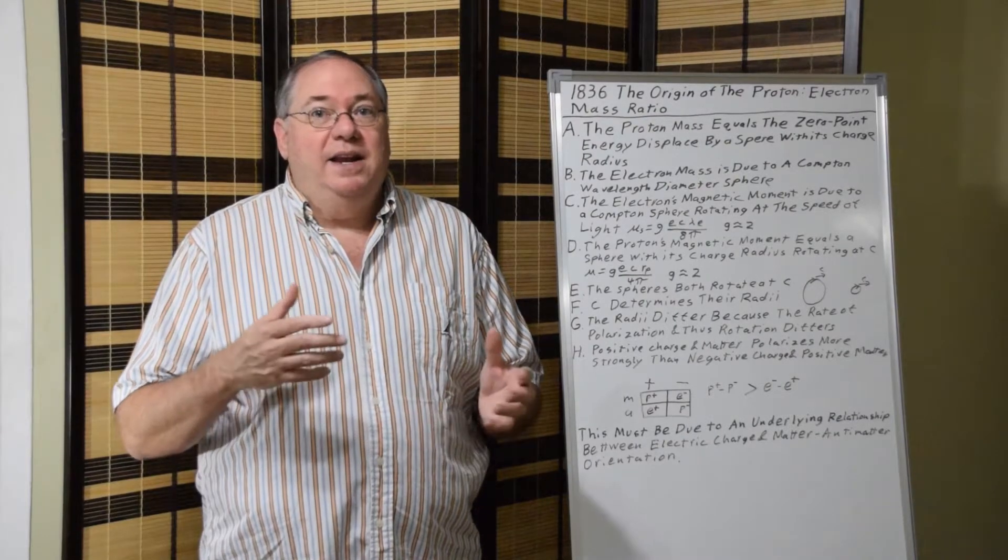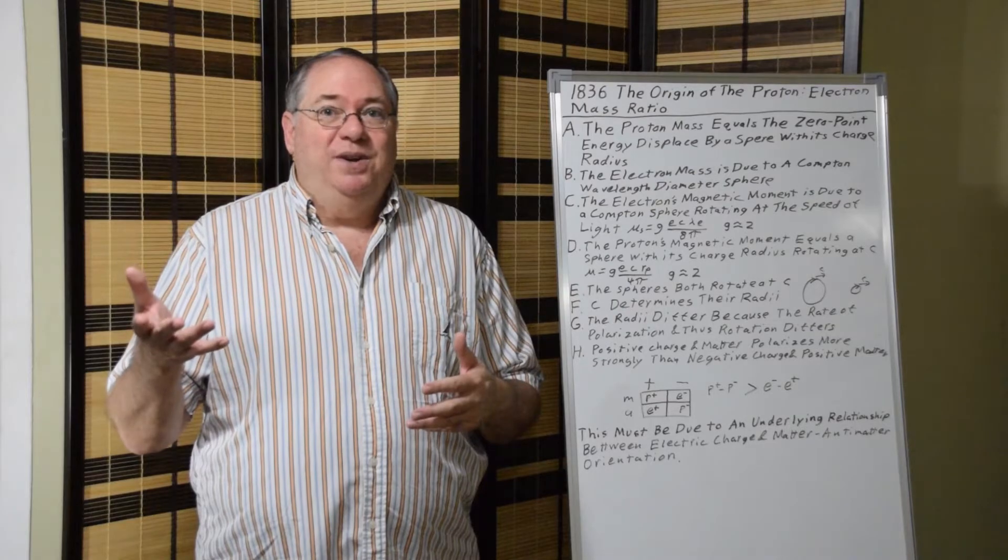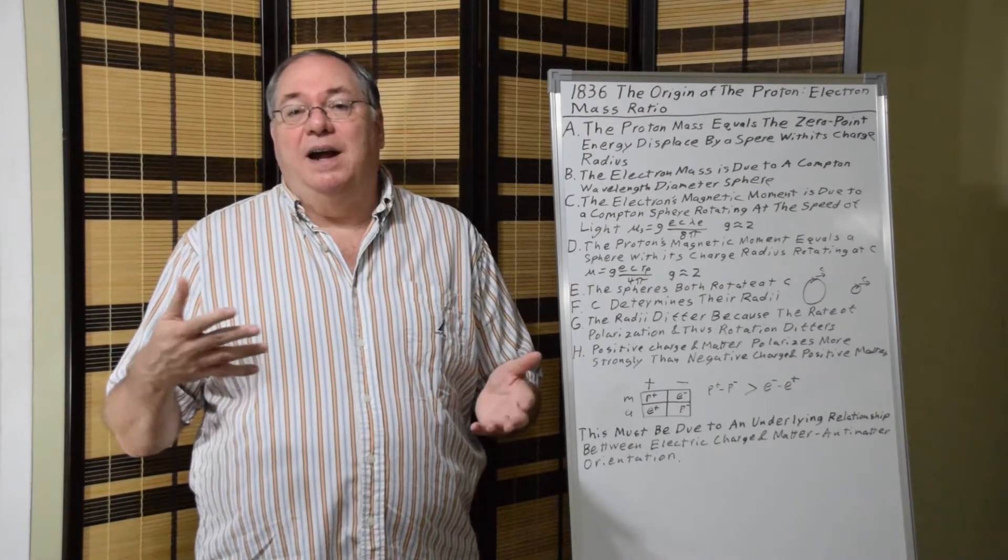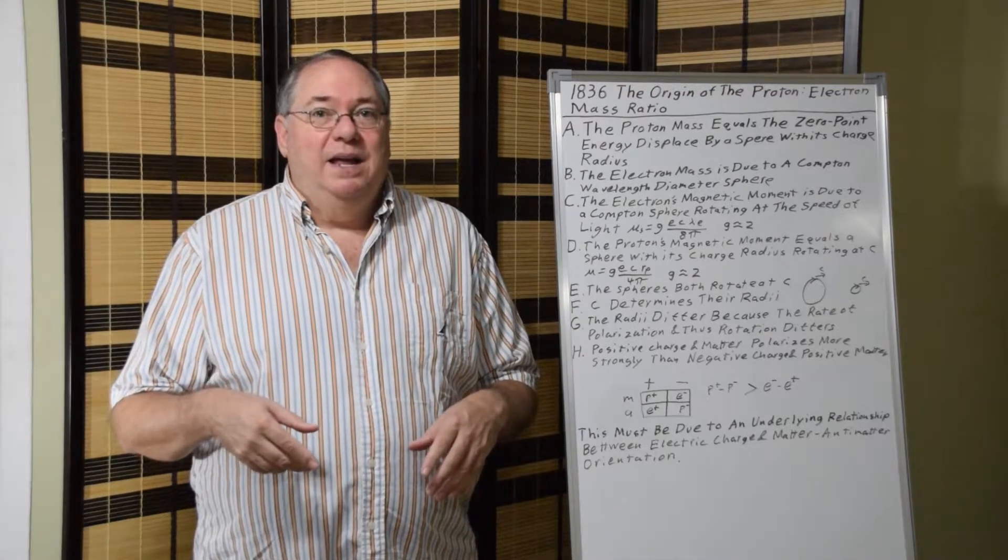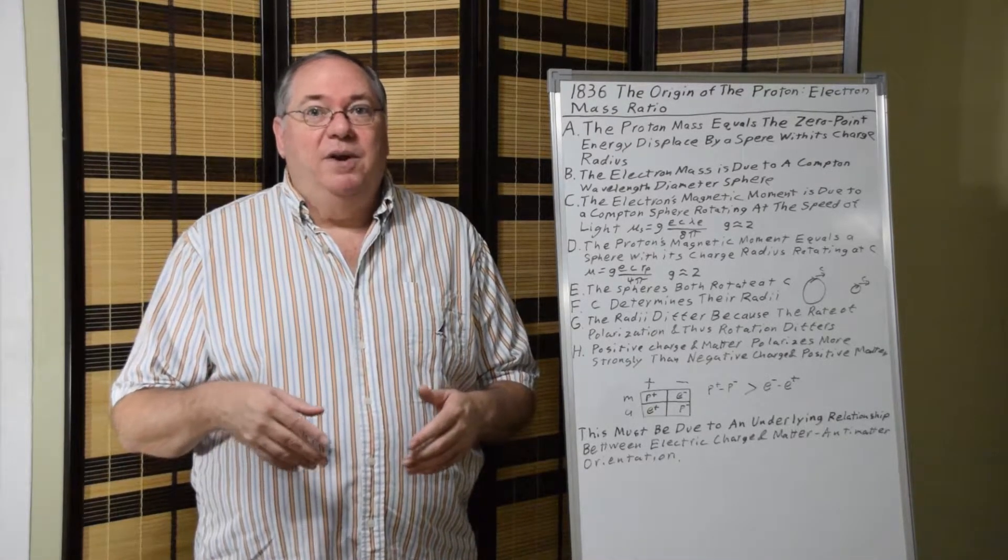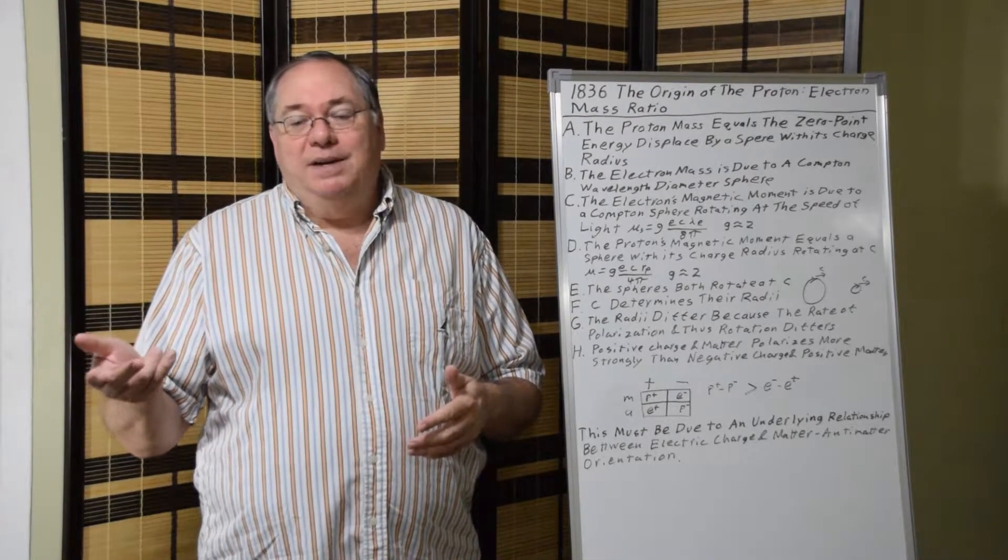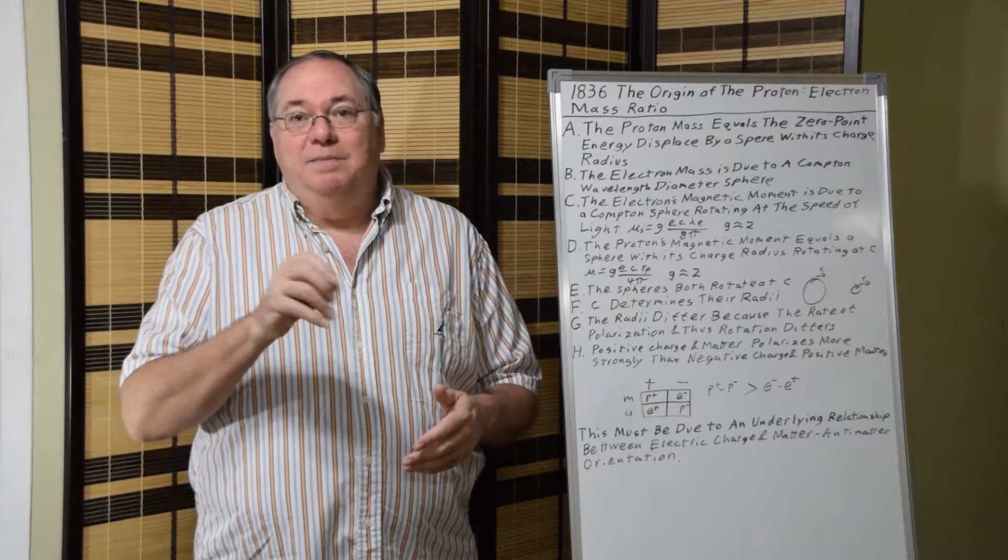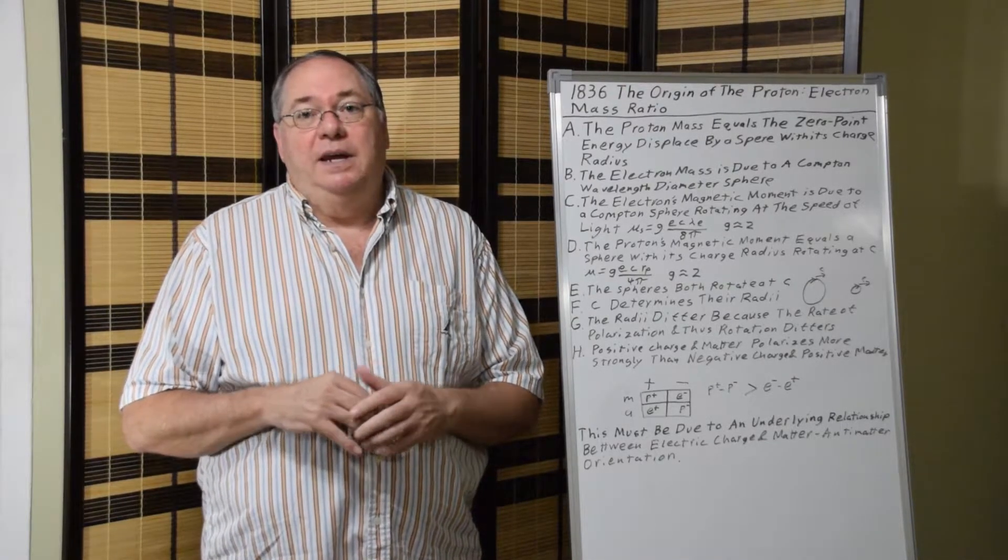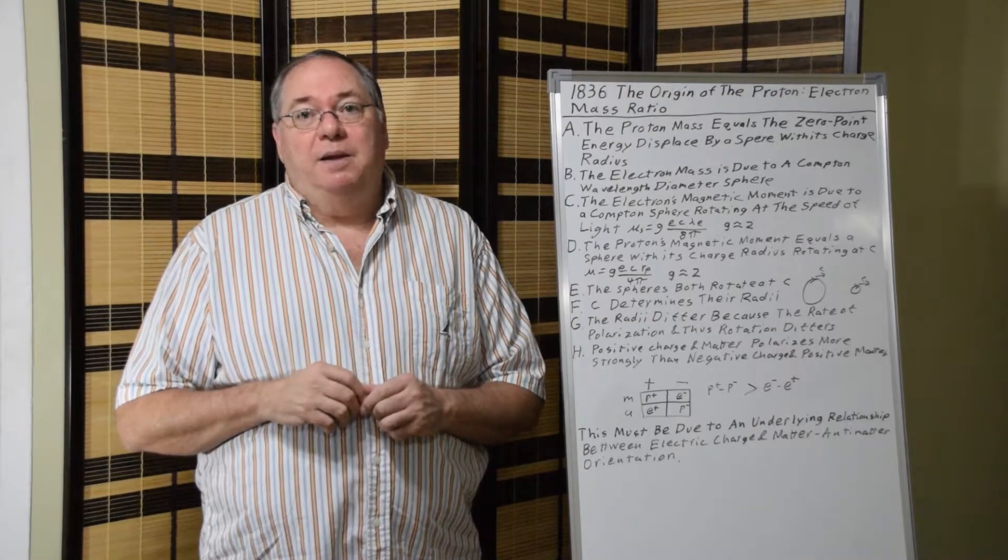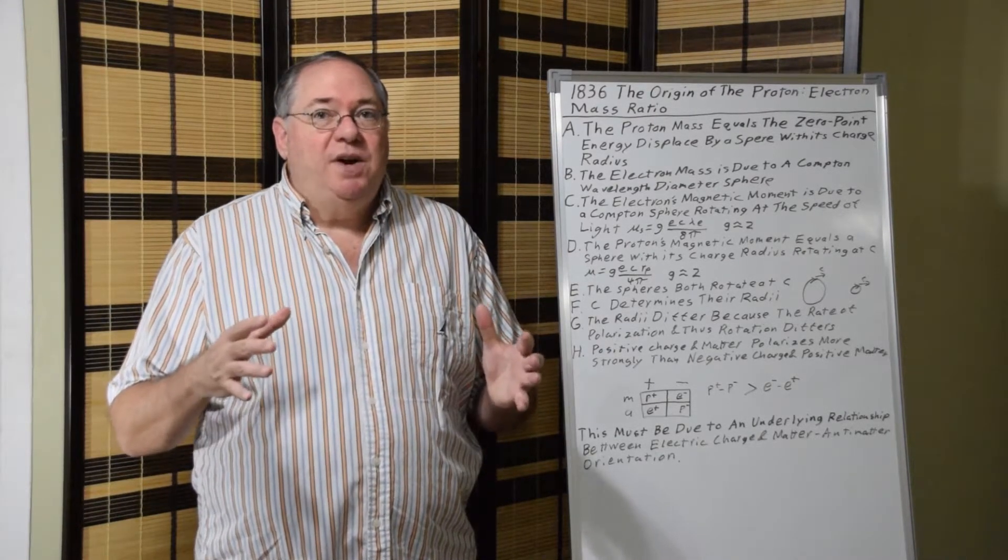If you take the electron's mass out of the magnetic moment equation, substitute in the Compton wavelength, you find that the magnetic moment is related to the Compton wavelength of the electron, where you have E, C, Compton wavelength divided by 8 pi, times a factor of 2, and that gives you the magnetic moment of the electron. So this is all straightforward. You have one big shell, one small shell, and they're both rotating at the speed of light.